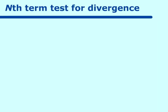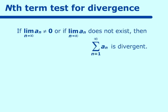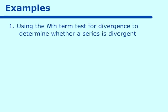The first one is the nth term test for divergence. The test states: if the limit as n approaches infinity of a sub n does not equal 0, or if the limit as n approaches infinity of a sub n does not exist, then the sum from n equals 1 to infinity of a sub n is divergent. Remember, the test tells you nothing about convergence — it only talks about divergence.